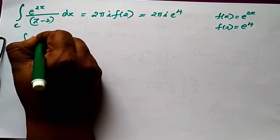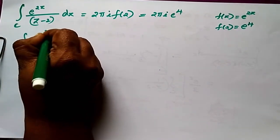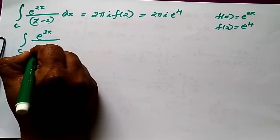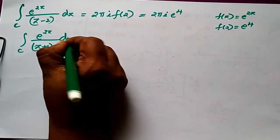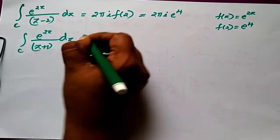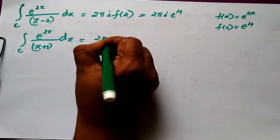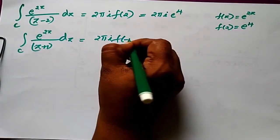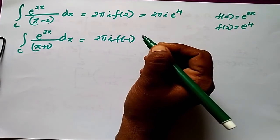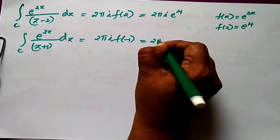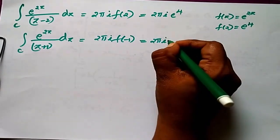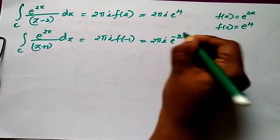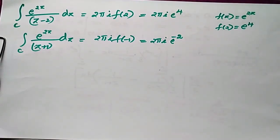For the second part: integral c of e^(2z)/(z+1) dz = 2πi · f(-1) = 2πi · e^(-2).